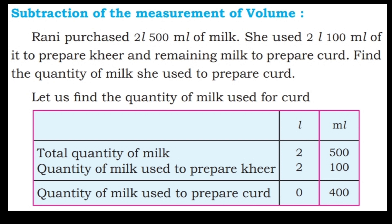Total quantity of milk is equal to 2 liter 500 ml. Quantity of milk used to prepare kheer is equal to 2 liter 100 ml. Quantity of milk used to prepare curd: 0 minus 0 is 0, 0 minus 0 is 0, 5 minus 1 is 4. So the quantity of milk used to prepare curd is equal to 400 ml.